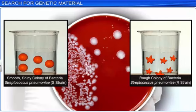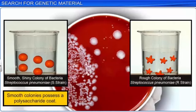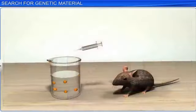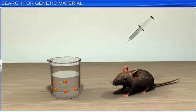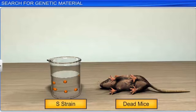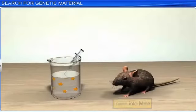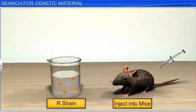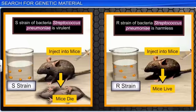Frederick grew the bacteria in a culture plate and found that they were of two forms: the smooth and the rough. The smooth shiny colonies, or the S strain of the bacteria, possessed a mucus or a polysaccharide coat, while the rough colonies, or the R strain, had no such coat. When the mice were injected with the S strain, they died of pneumonia infection, while those injected with the R strain did not develop pneumonia. This proved that the S strain of bacteria was virulent or lethal, while the R strain was harmless.